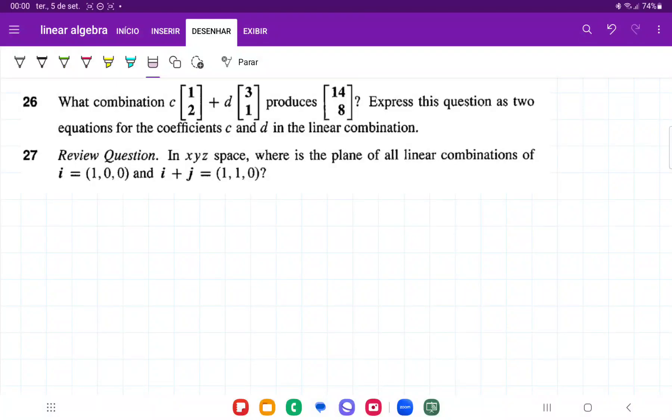So for number 26, it's asking us what combination of the vector [1,2] and the vector [3,1] produces the vector [14,8].